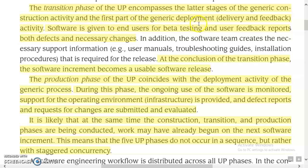Software is delivered to end users for beta testing and user feedback is reported. Both defects and necessary changes are noted. At the conclusion of the transition phase, the software increment becomes a usable software release. In the transition phase, we deliver the software to a few users, collect feedback, identify risks, and do troubleshooting. We produce the software increment and collect feedback.